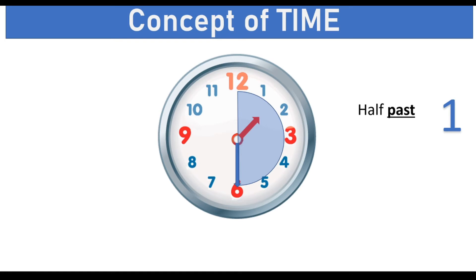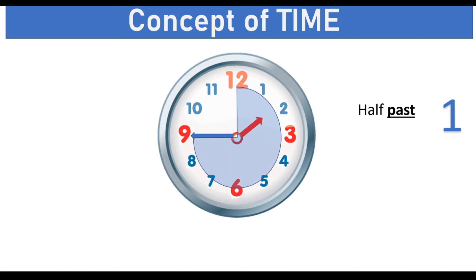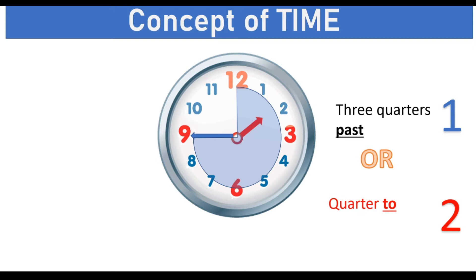we call the time to be half past 1. Now when the minute hand covers 3 quarters of the circle, we call the time to be 3 quarters past 1. Or another way to call this time is quarter to 2, meaning a quarter is left for the clock to strike 2. So this is how we read the time.